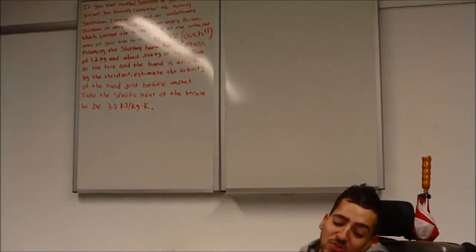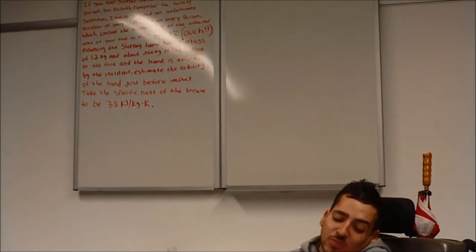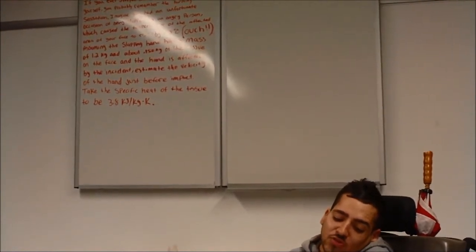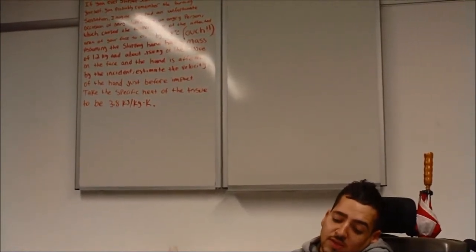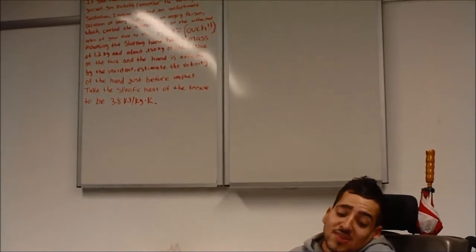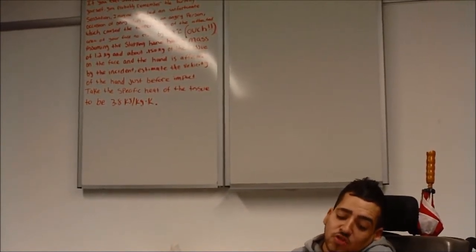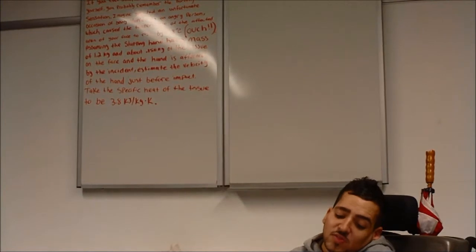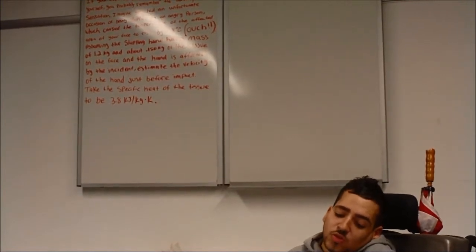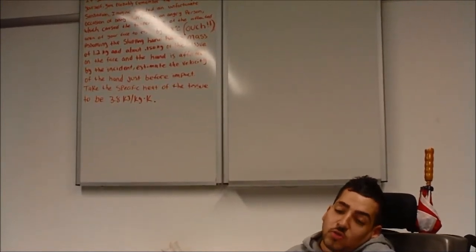Assuming a slapping hand has a mass of 1.2 kilograms and about 0.15 kilograms of the tissue on the face and the hand is affected by the incident, estimate the velocity of the hand just before the impact. Take the specific heat of the tissue to be 3.8 kilojoules per kilogram Kelvin.